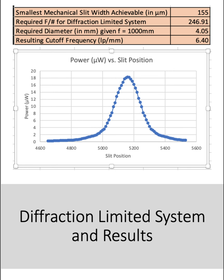Then we placed the slit at that best focus and scanned across to measure the line spread function. To create a diffraction-limited system, we wanted the slit width to be 1 over V0, which was the cutoff frequency, in order to gather only the Airy disk. However, the smallest slit width that we could mechanically obtain was only 155 microns. Hence, to satisfy the 1 over V0 requirement, we had to make the F number very large, around 250. This was done by stopping down the system.